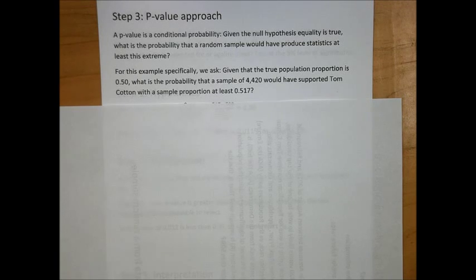For this example specifically, we ask, given that the true population proportion is 0.5, what is the probability that a sample of 4,420 would have supported Tom Cotton with a sample proportion of at least 51.7%?